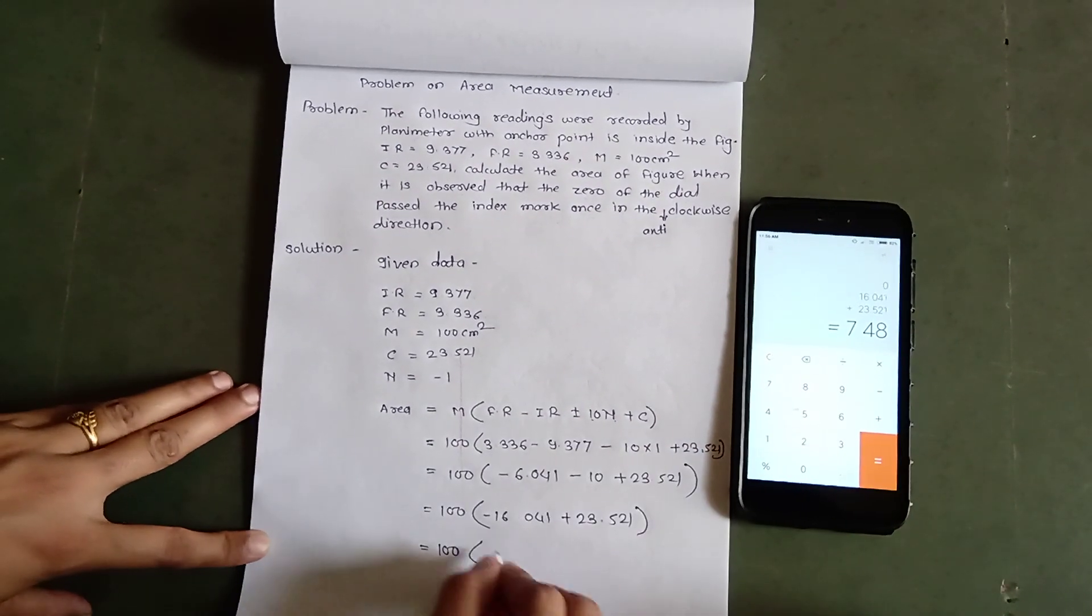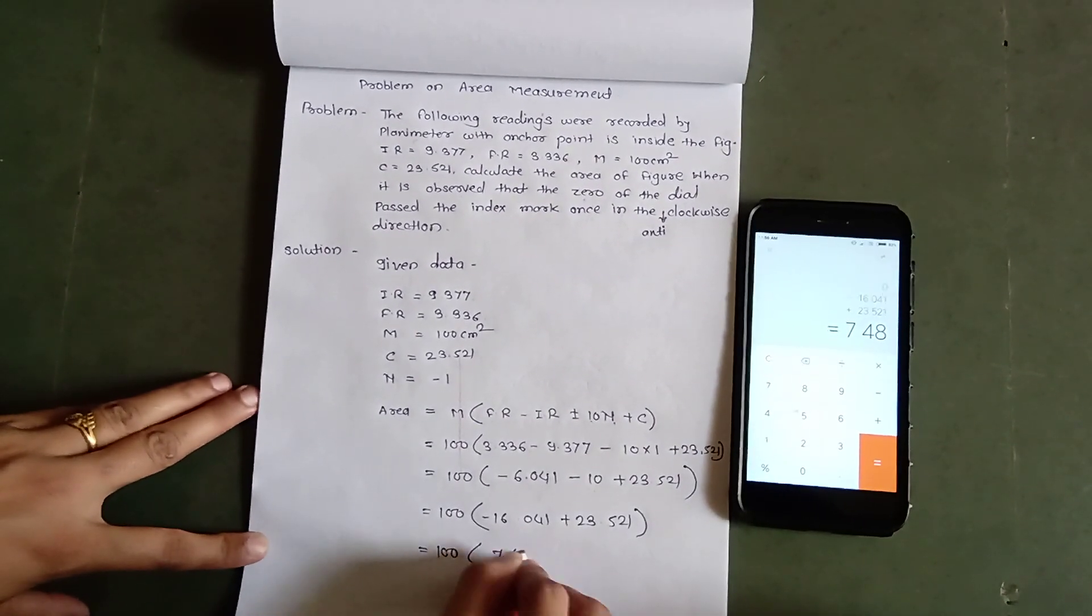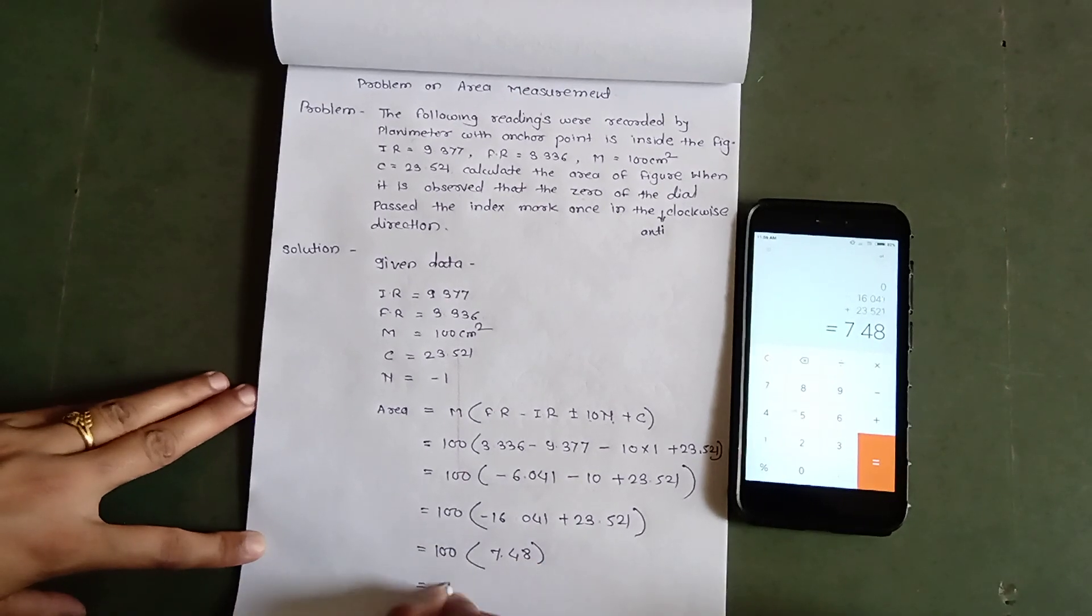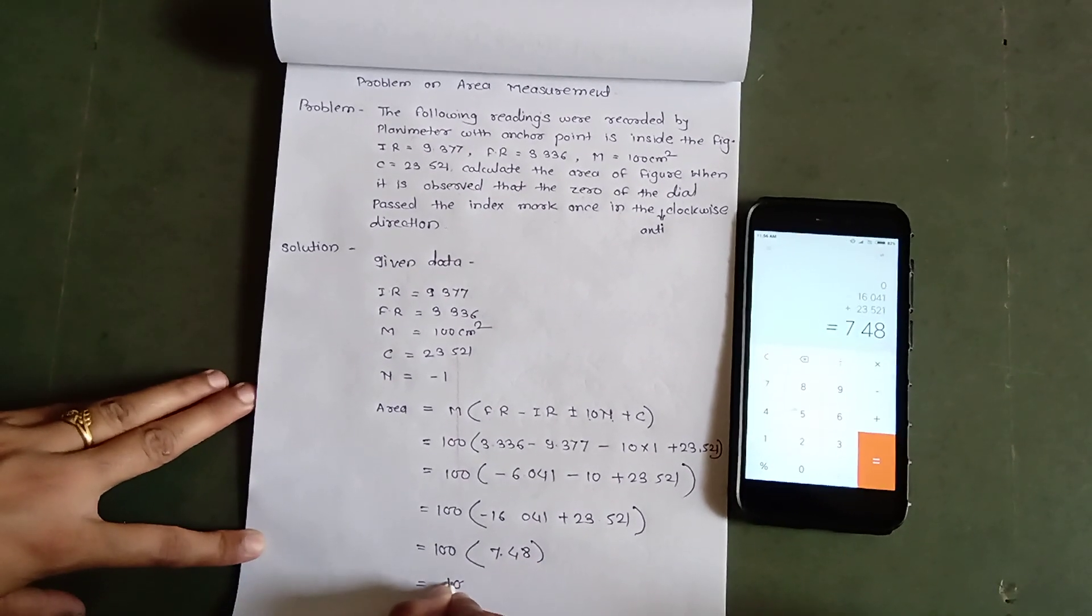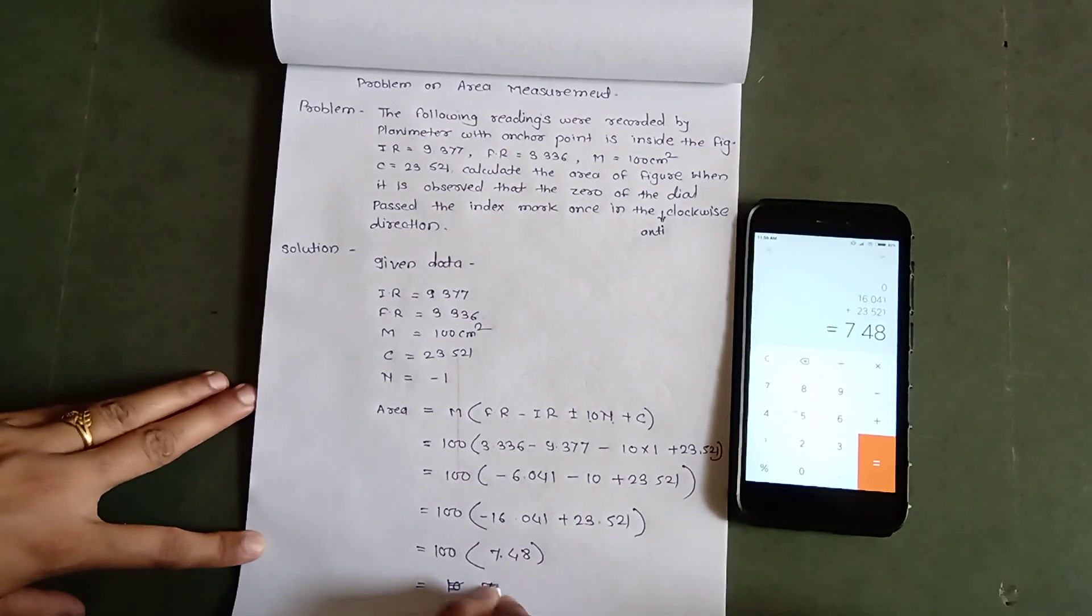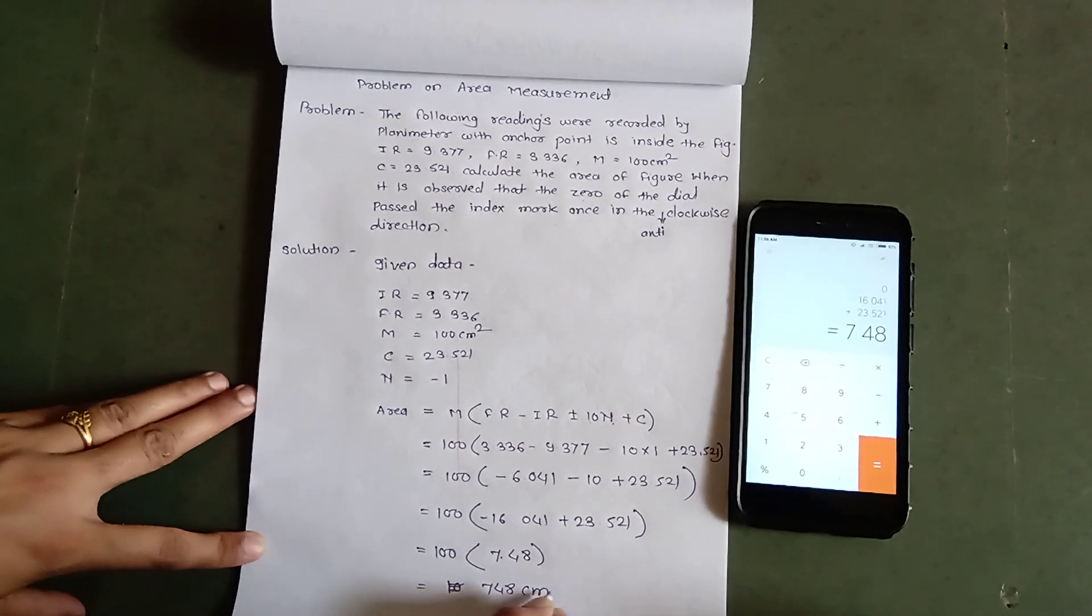It equals 7.48. So finally, the area equals 7.48 cm².